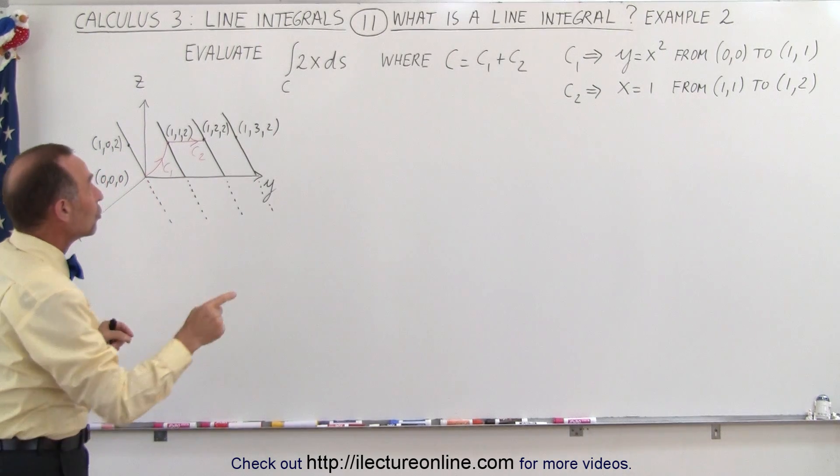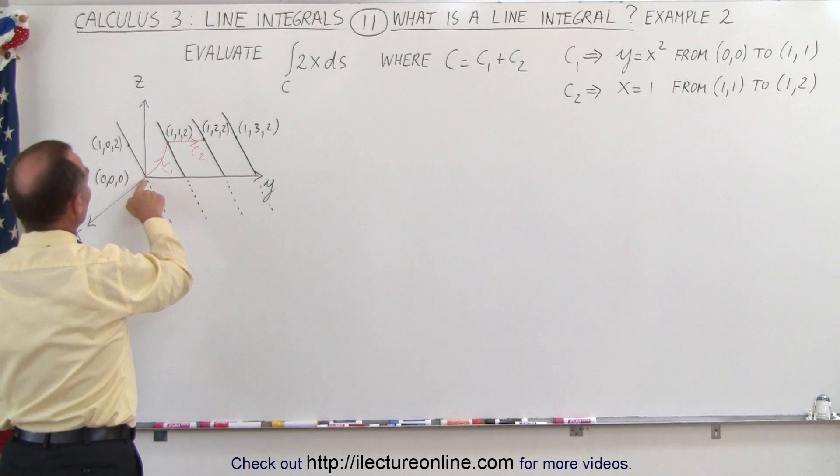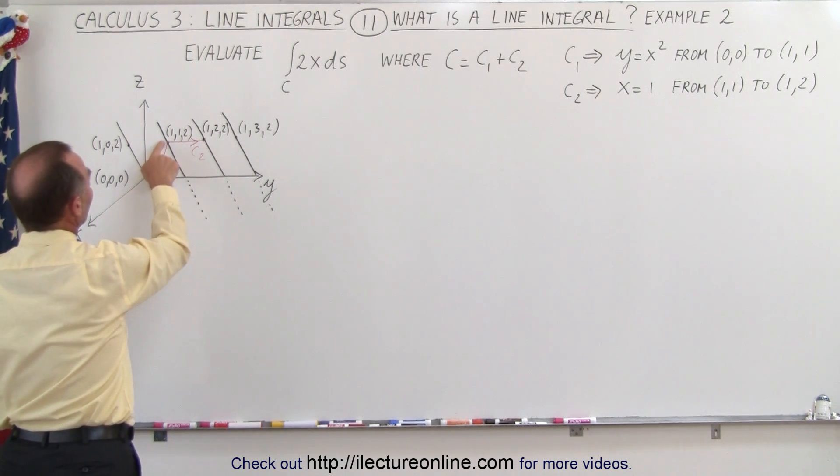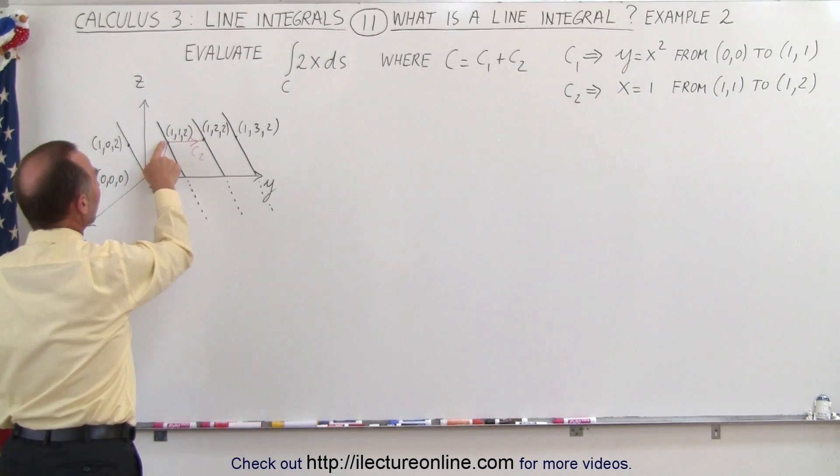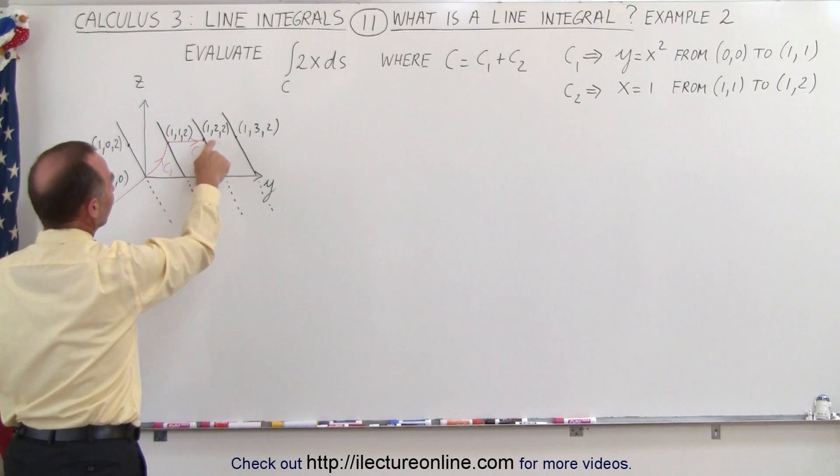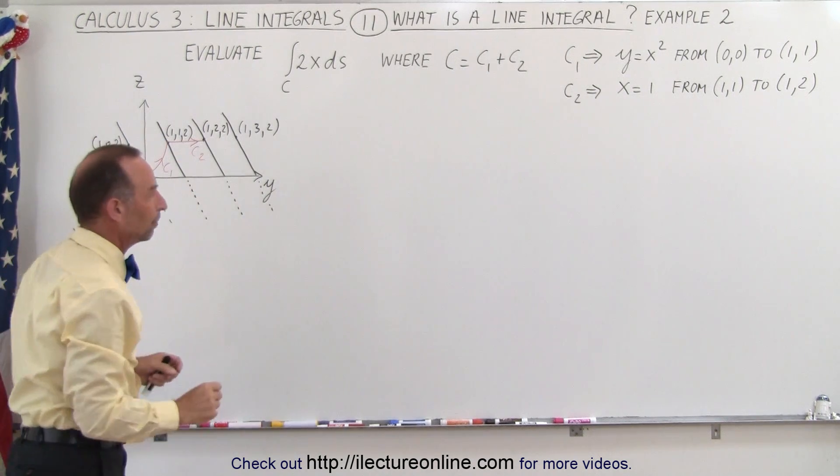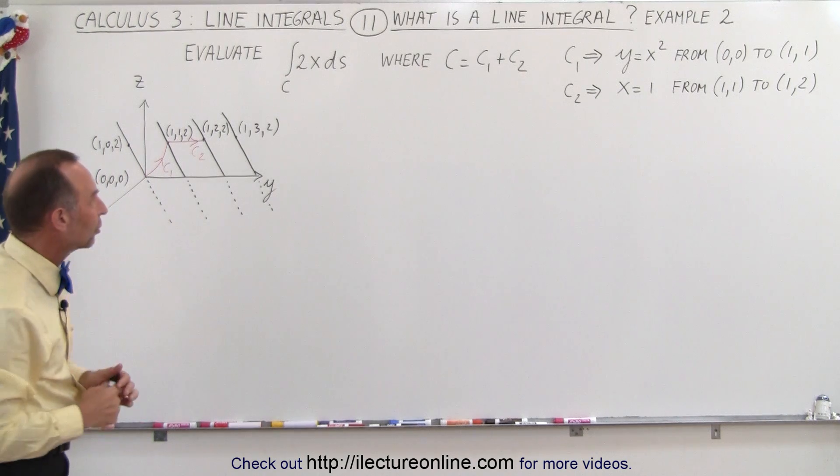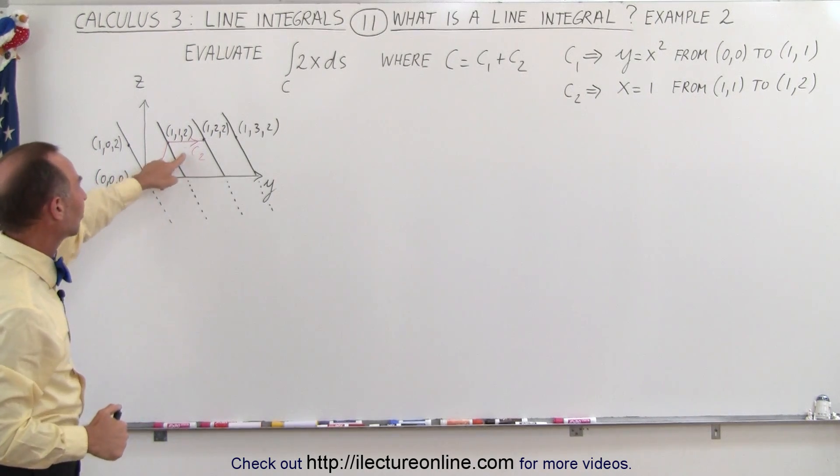So then the curve we're going to use to do the line integral with first starts at the origin and stops at x equals 1, y equals 1. And then the second curve is a line that goes from x equals 1, y equals 1 to x equals 1, y equals 2. So there's only a change in the y direction. So we'll actually have to do two integrals, one for this curve and one for that curve.